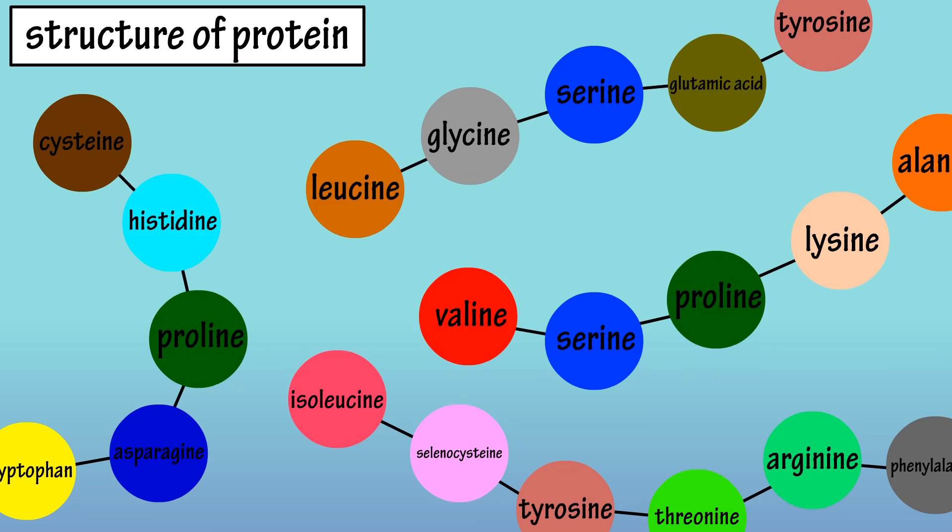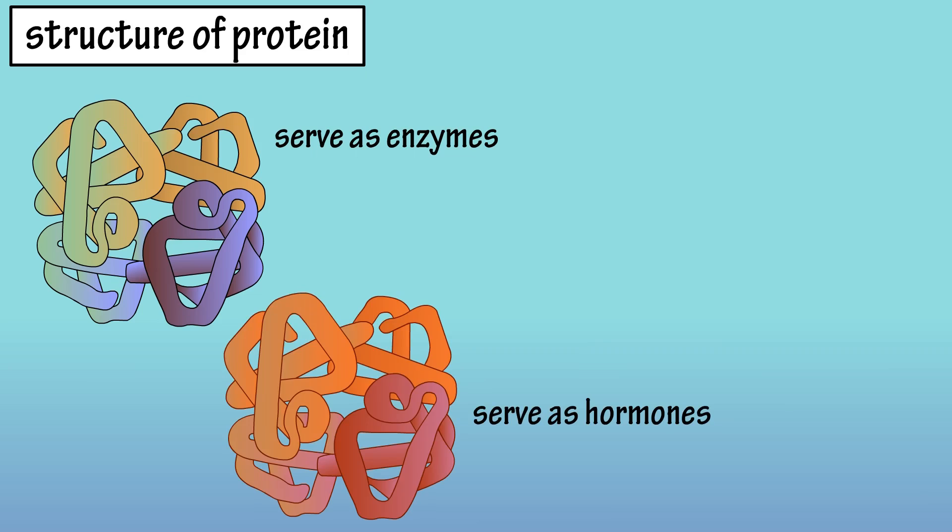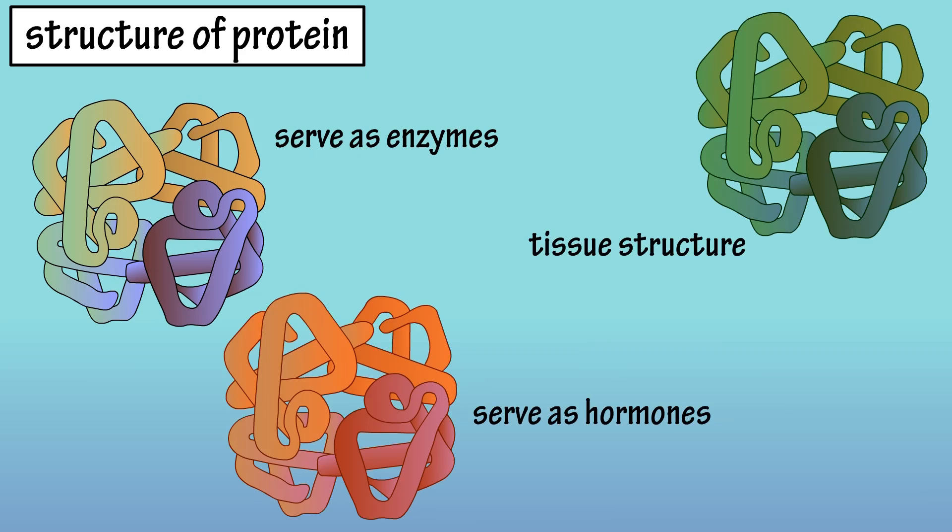So, amino acids link together in a variety of sequences to form different types of proteins. Some of these proteins serve as enzymes, which help speed up metabolic reactions in the body. Some serve as hormones, and help regulate certain functions in the body. And some proteins help form the structure of various tissues in the body. These are just a few of the many, many functions that proteins have in the body.